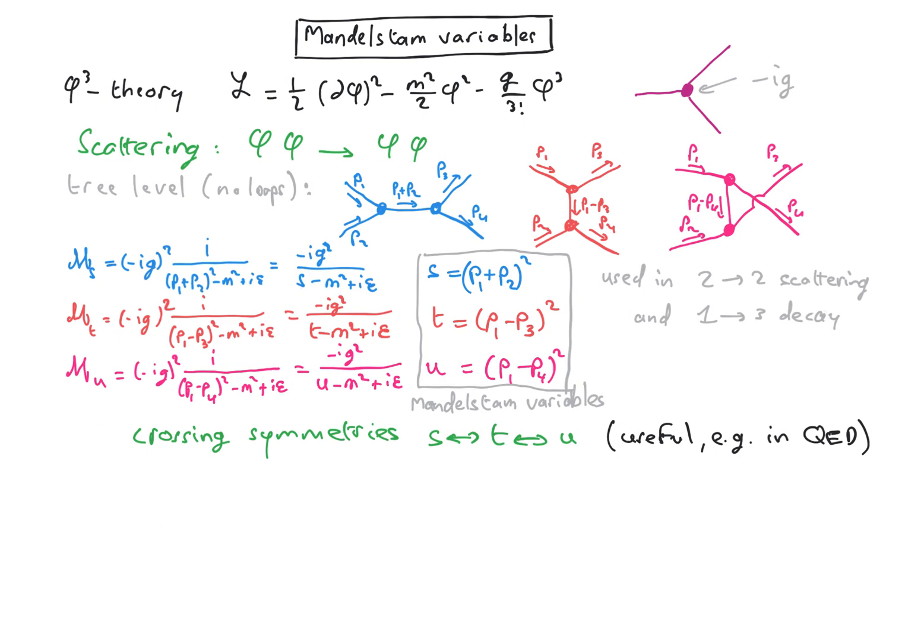The Mandelstam variables are still useful, even if we have different masses. We have in general a property which we can show: s plus t plus u is equal to the sum of the square of the masses of the particles involved.